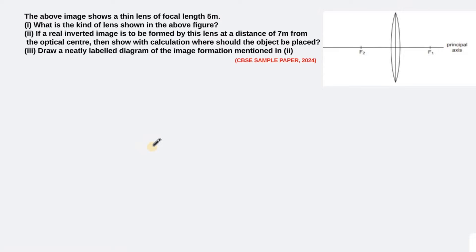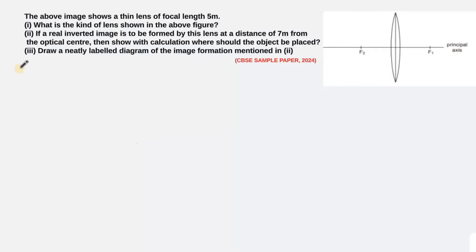Hello students, welcome back. Let's have a look at the next question. It's a question from the light chapter and it's a sample paper question. It reads: the above image shows a thin lens of focal length 5 meter. The questions are: first, what's the kind of lens shown in the figure? Second, if a real inverted image is to be formed by this lens at a distance of 7 meter from the optical center, show with calculation where the object should be placed. Third, draw a neat labeled diagram of the image formation mentioned in question 2.